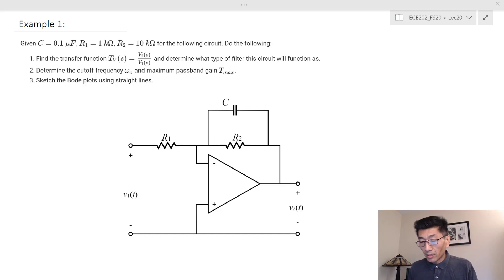Let's look at an example of this op-amp circuit. Here I have the parameters: R1 is 1 kilo-ohm, R2 is 10k, and C is 0.1 microfarad. These are the parameters we know.